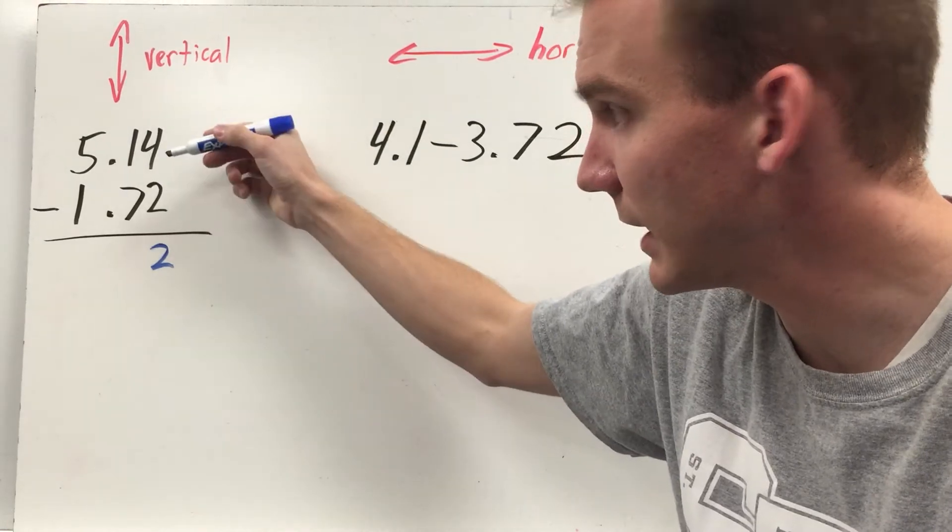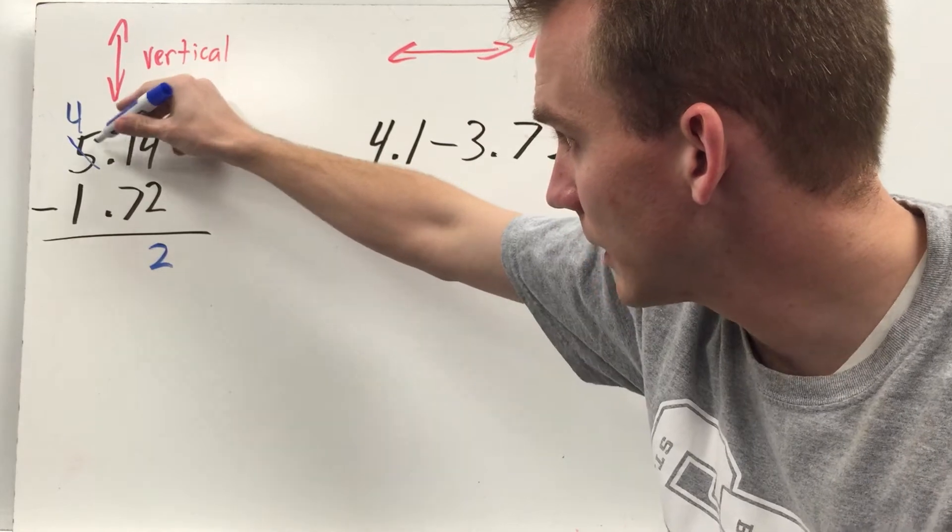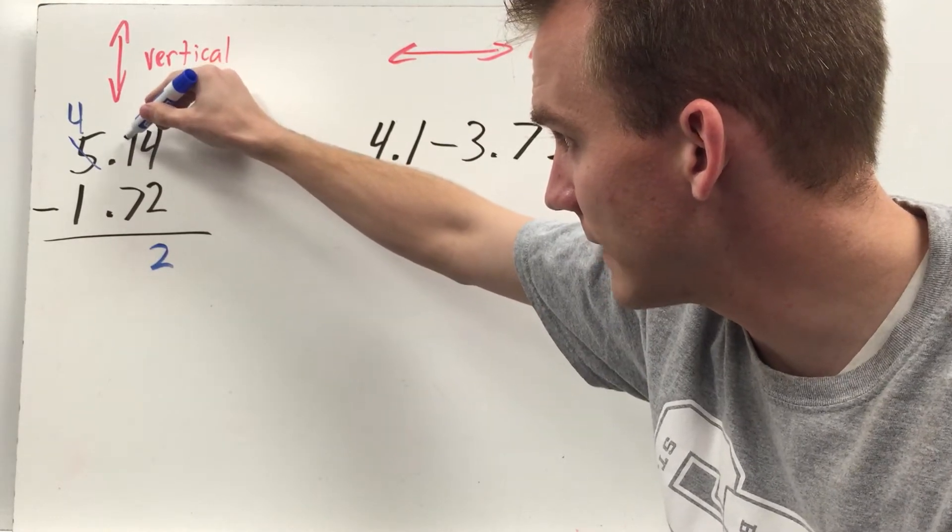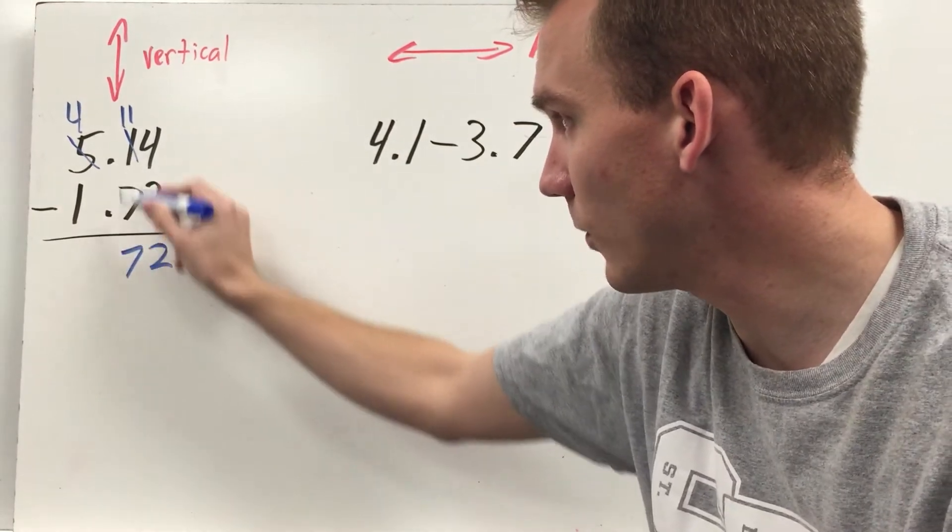One minus seven. I need to regroup here. So I'm regrouping. I have four ones now, and those four ones, take one away, and now I have ten tenths plus the one is eleven tenths. Eleven minus seven is going to be four.